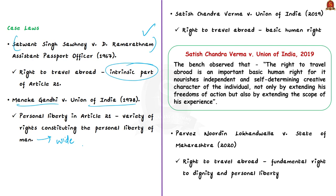The next case, Satish Chandra Verma vs. Union of India, equated the right to travel abroad to a basic and genuine human right — similar to the right to marry and have a family — and observed that travel nourishes the individual's independent and self-determining character. More recently, Parvesh Nooruddin Lokhandwala vs. State of Maharashtra (2020) held that the right to travel abroad is part of the fundamental right to dignity and personal liberty.